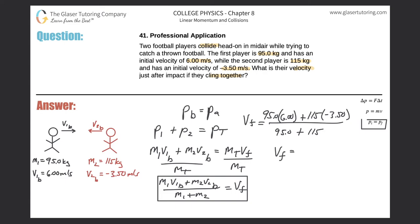So now when I just plug this into the calculator, voila, we will get our answer. 95 times 6 plus 115 times negative 3.5, and then divide that by parenthesis 95 plus 115. And we get a final value of positive 0.798, if we consider rounding, and that is in meters per second.